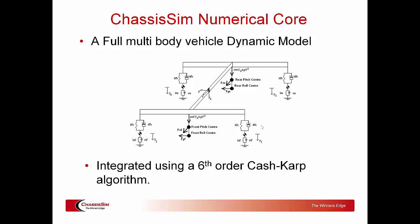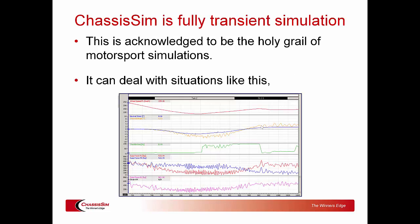ChassisSim's numerical core is a full multi-body vehicle dynamic model integrated using a sixth-order Cash-Karp algorithm. That ultimately gave ChassisSim the basis to do something very unique: transient lap time simulation. One of the holy grails of vehicle dynamics — particularly road vehicle dynamics — is to specify a path and solve transiently what the vehicle can do in terms of maximum performance. That means ChassisSim can deal with situations like this: speed, steer angle, throttle, and here are the tire loads — front and rear. Take a look at the variation in that tire load; it's now dealing with bumps. That really illustrates the areas where transient lap time simulation can go that pseudo-static lap time simulation cannot. That is one of the first bedrocks that makes ChassisSim unique.